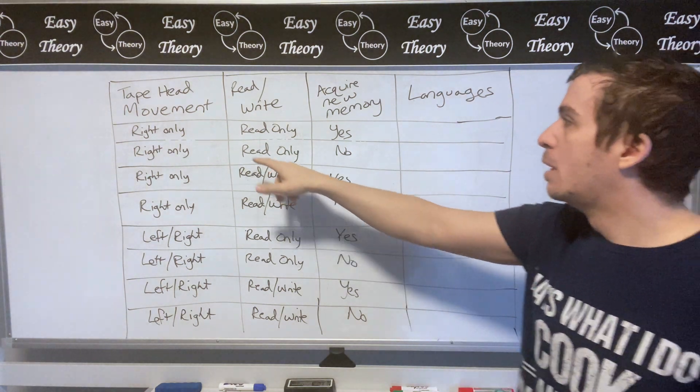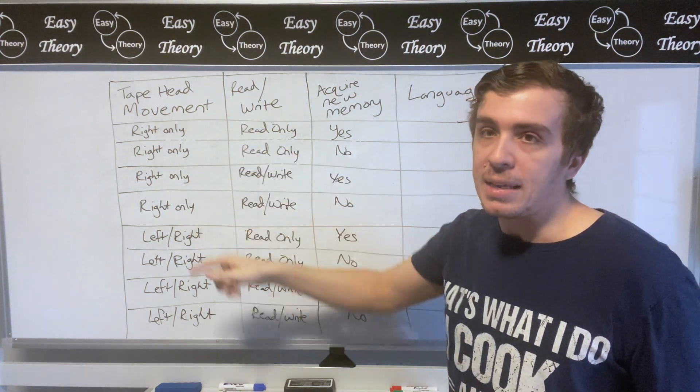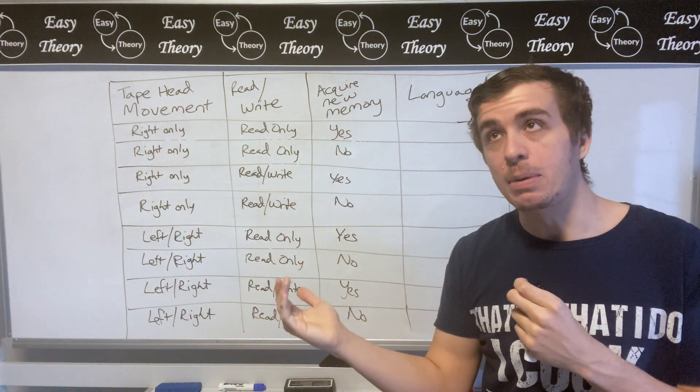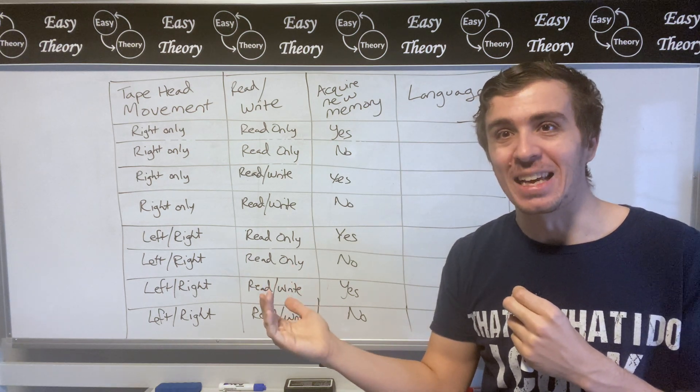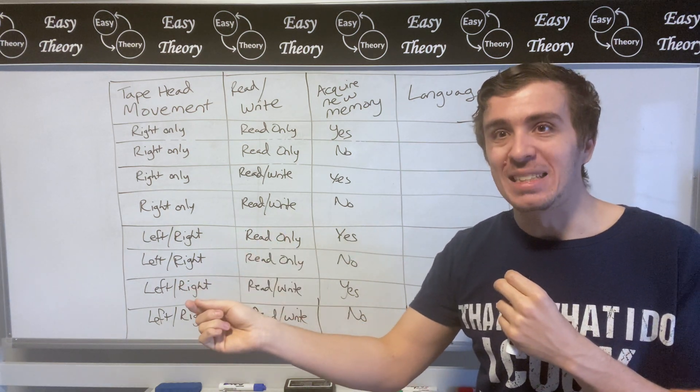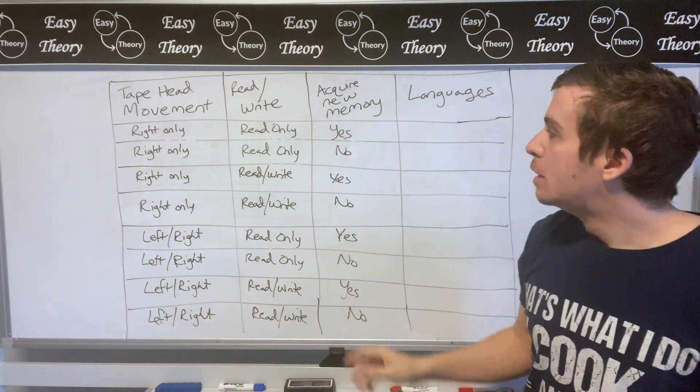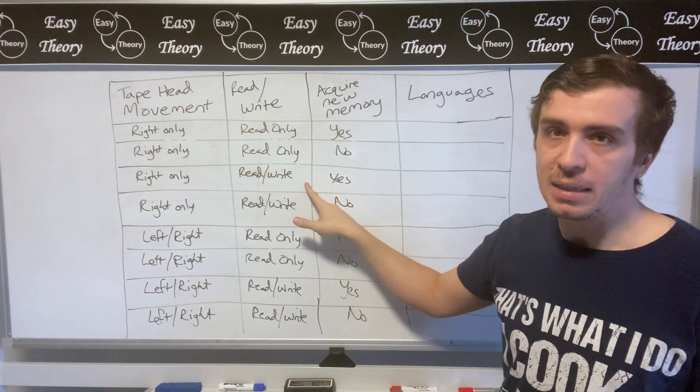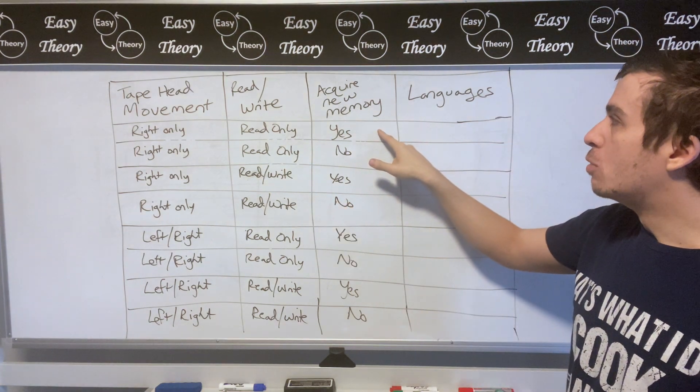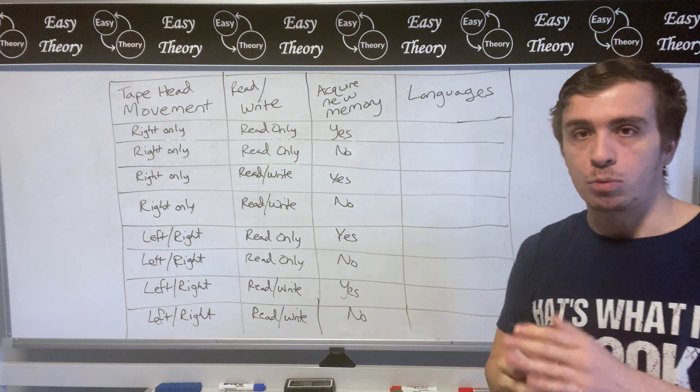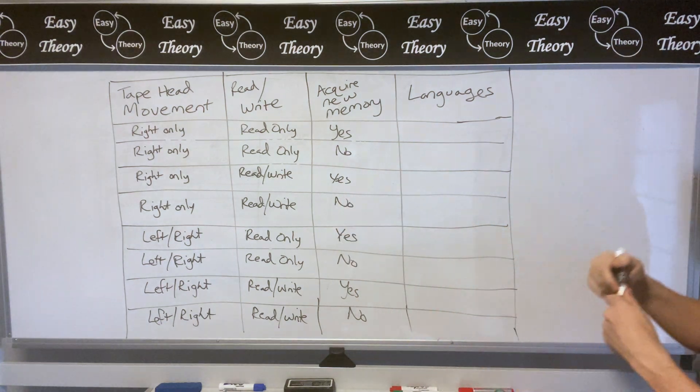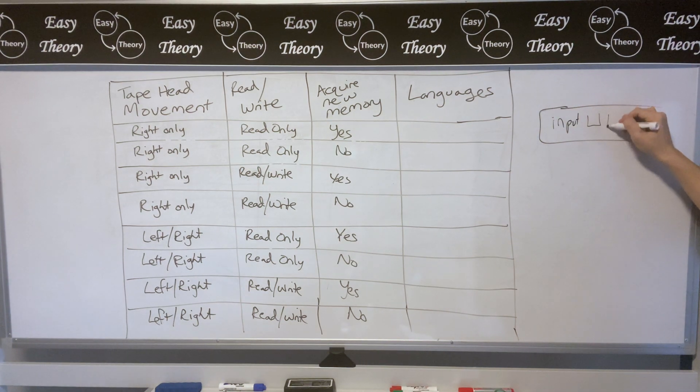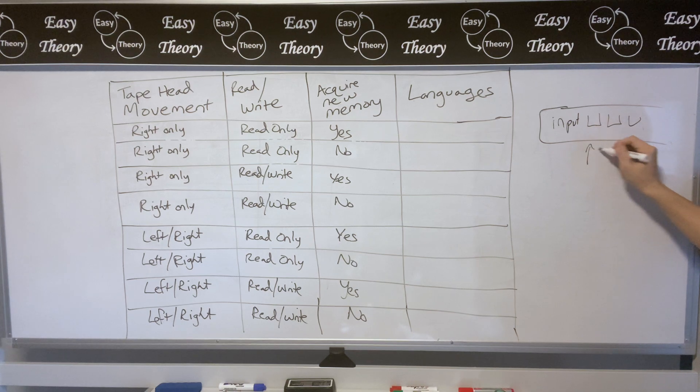Well if we have a machine that only moves right then there's no point in its ability to be able to write, W-R-I-T-E not R-I-G-H-T, and to be able to write values in its previous cells. So the fact that we have a write only machine that does a read and a write is completely useless. And then on the ability to acquire new memory let's think about what that means. Well if we have an input right here so we have some tape of some kind and the input is right here.